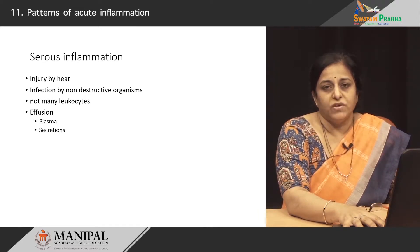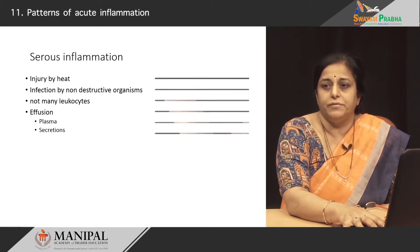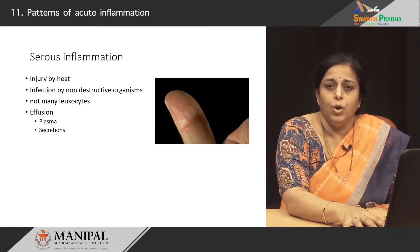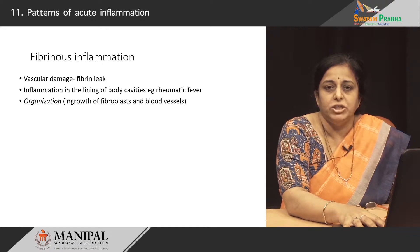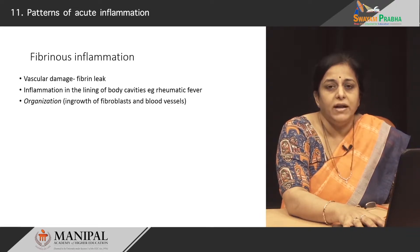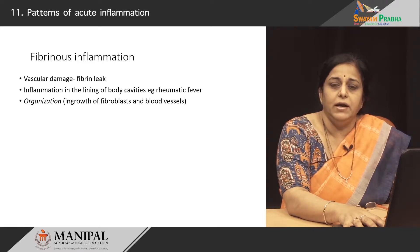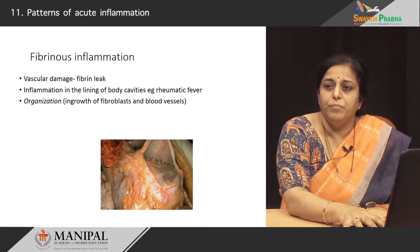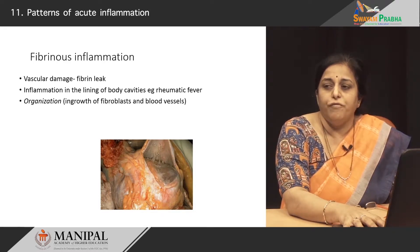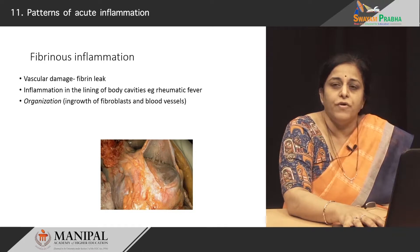A classical example of serous inflammation is blister formation at the site of injury by heat. The second type, fibrinous inflammation, occurs particularly when there is a lot of vascular damage with leakage of fibrin. A classical example is rheumatic fever, where fluid accumulates in the pericardial cavity due to immunological damage to the vessels and deposition of fibrinous material. The fibrin appears very cheesy — you can see the opened heart with the pericardial cavity, which has fibrin strands sticking between the two pericardial layers. This often resolves with a lot of fibrosis, so scarring is classically seen in the resolution of fibrinous inflammation.